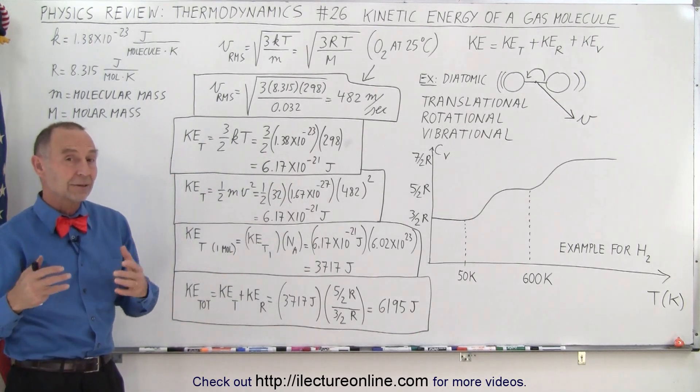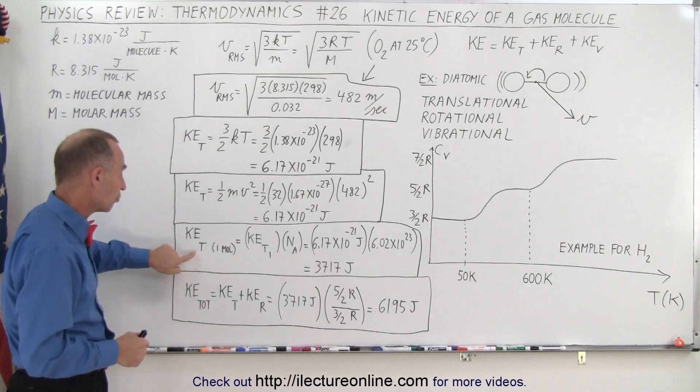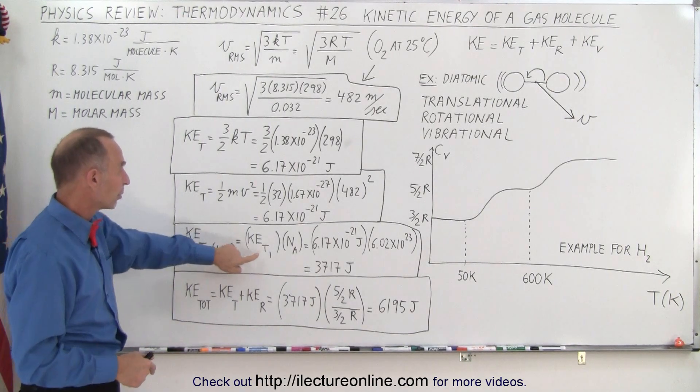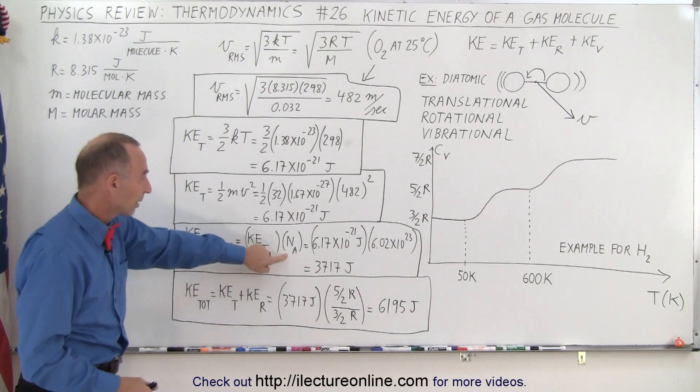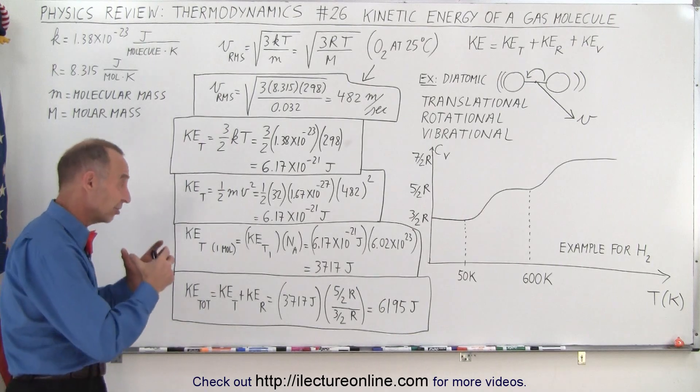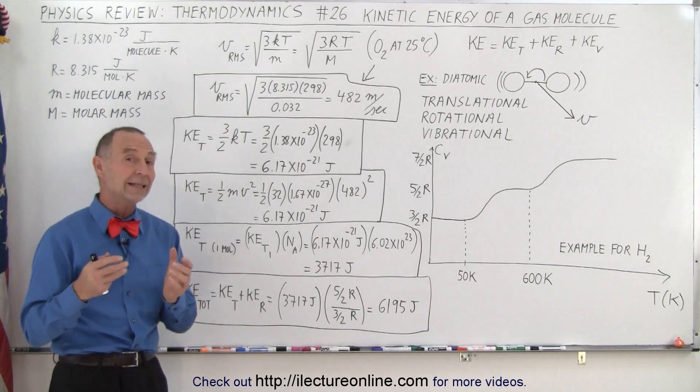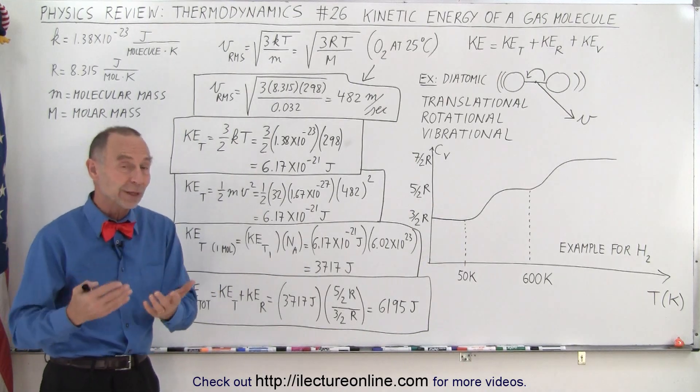If we now want to find out the kinetic energy contained for an entire mole of molecules due to translational motion, we simply multiply the kinetic energy for a single molecule times Avogadro's number to get the total kinetic energy, translational kinetic energy, of a mole of gas molecules.